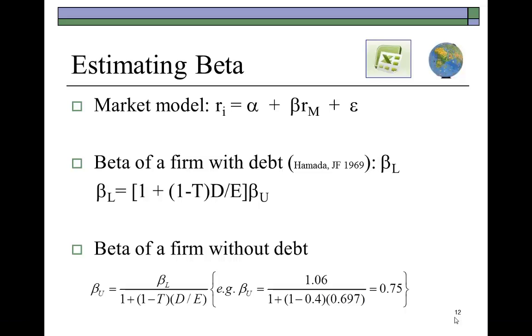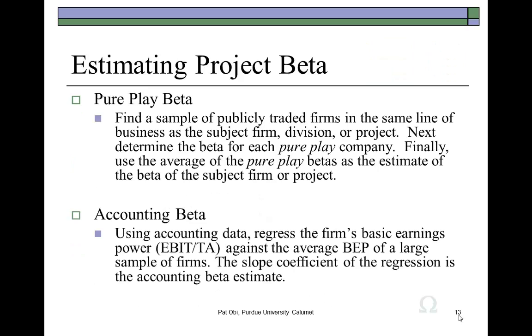Going back to our PowerPoint presentation, a couple other methods for obtaining beta estimates, especially if the company isn't publicly listed or if you're seeking to find the beta of a division or corporate project, are the pure play approach and the accounting beta approach. These methods are well described in any standard finance textbook. This concludes this first section of the presentation.